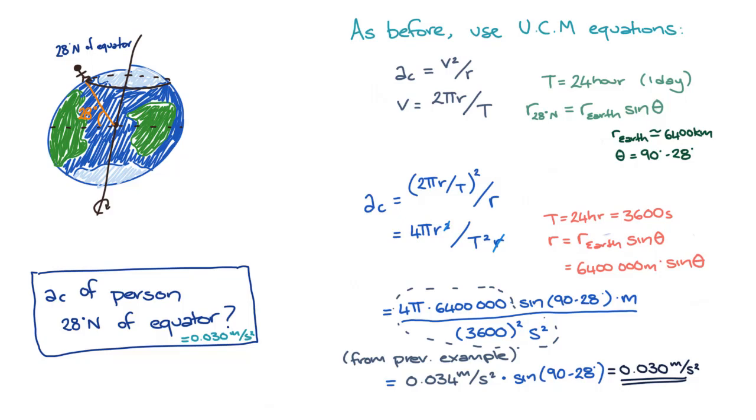What about the poles, though? At the poles, the person isn't traveling along a circular route anymore, so we'd expect that the centripetal acceleration should be 0. If the person were up at the north pole, 90 degrees north of the equator, then theta would be equal to 90 minus 90, or 0, and sin of 0 is 0, so this centripetal acceleration would be 0.